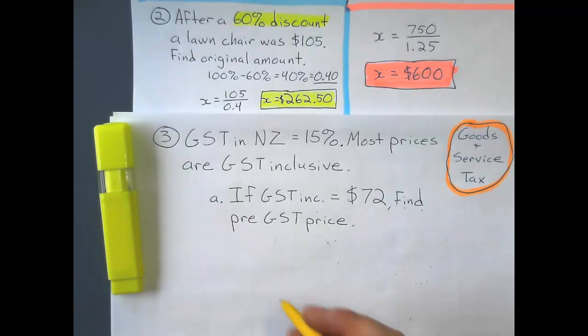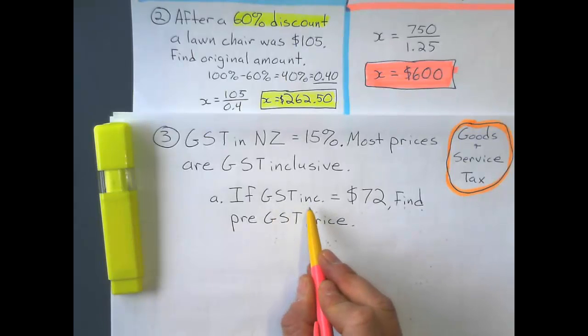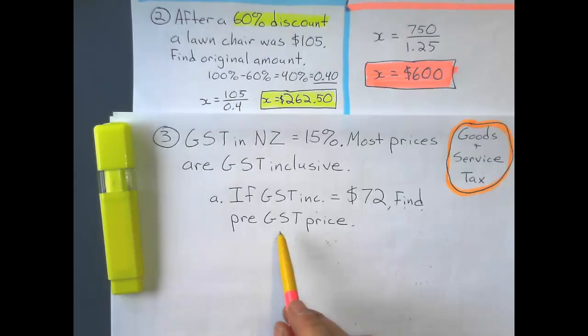We see this abbreviation GST INC. That means that the tax is already in the price. So when it says find the pre-GST price, it's not saying find the original amount, but that's what we're looking for.